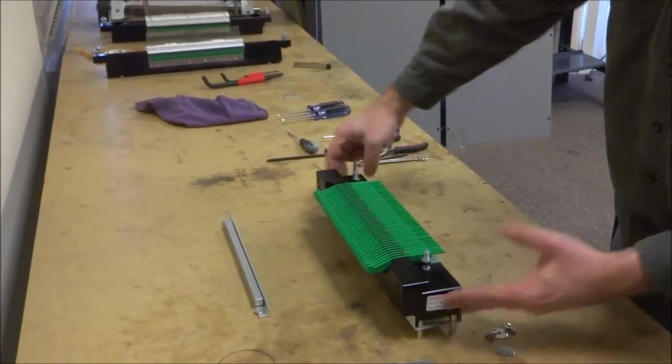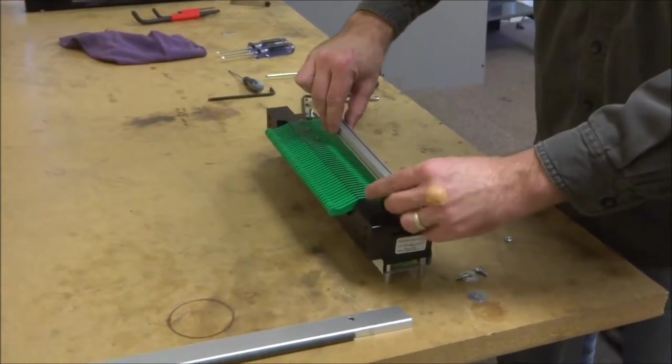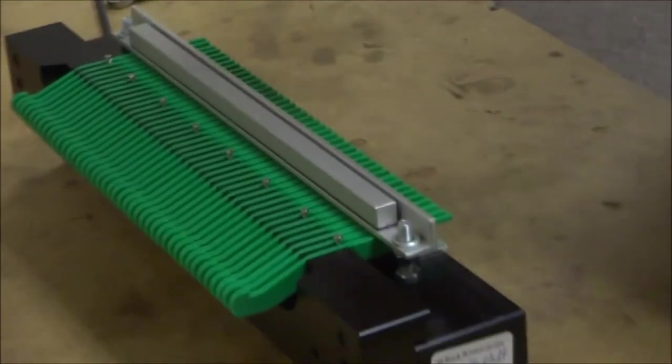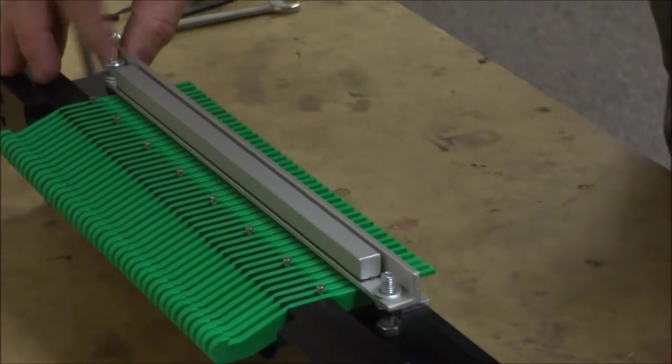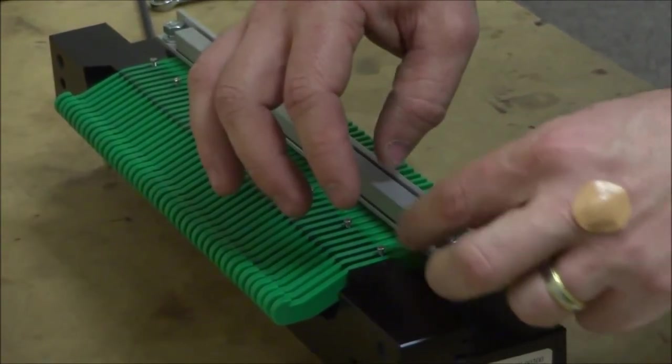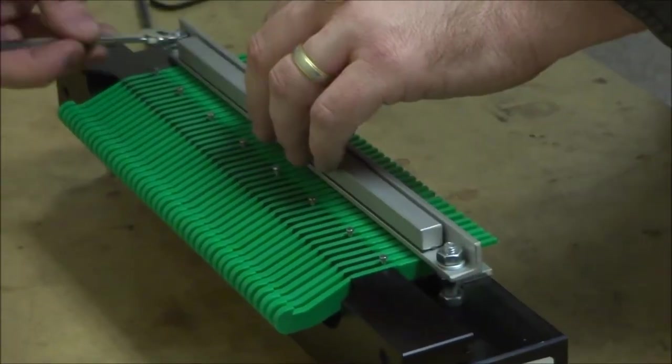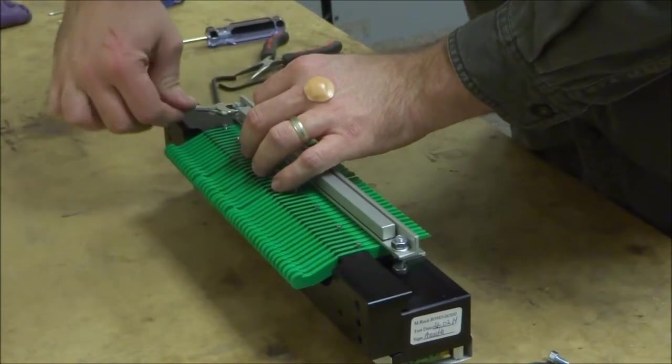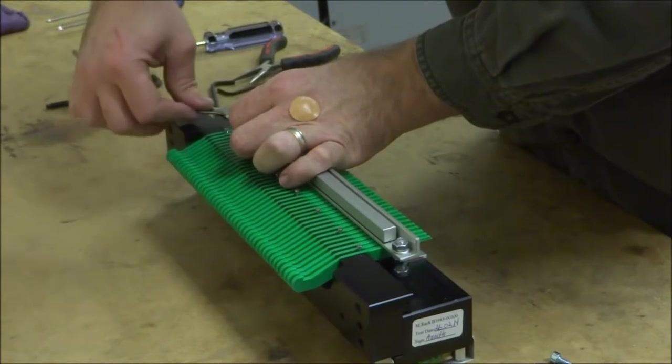Make sure this is tightened down firmly. Once the magnet rack is put back together, you're going to put the support list back on. Just put that on there and tighten it down. You want to tighten this down tightly.